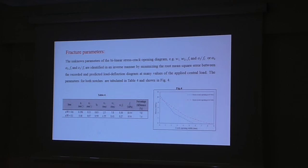The unknown parameters in the bilinear softening diagram, like W1, W2, FT, SIGMA1 over FT, or A1, A2, FT, and SIGMA1 over FT, are identified in an inverse manner by minimizing the error between the recorded and predicted load deflection diagram at many values of the mid-central load. And the parameters for both notches, 10 and 60mm, are calculated in Table 4 and shown in Figure 4.